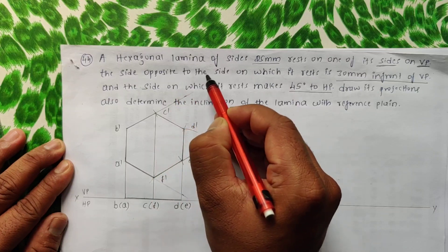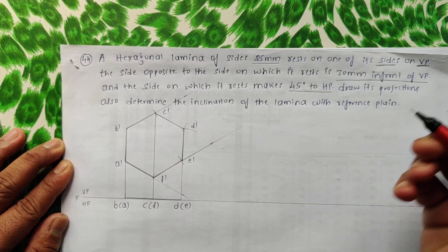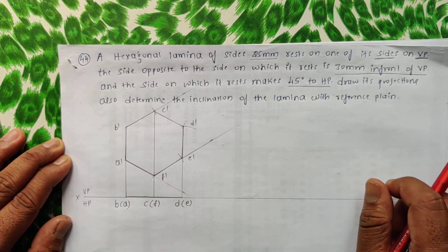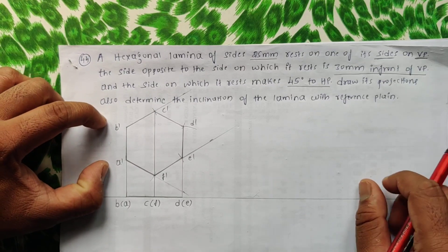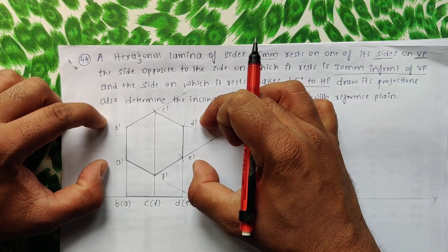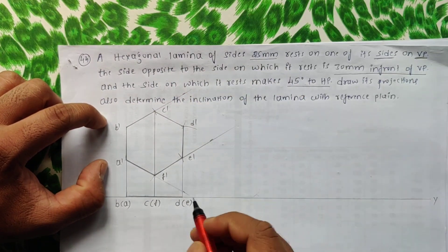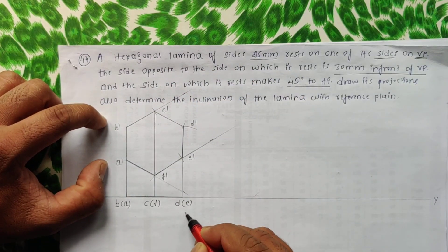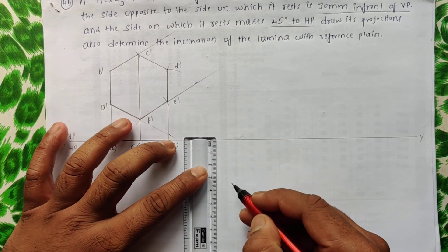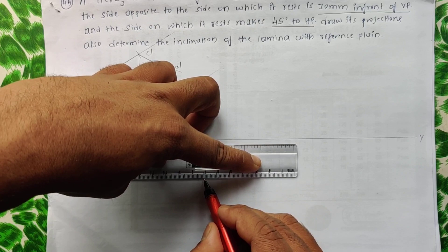Now check the next condition: the side opposite to the side on which it rests is 30mm in front of VP. In front of VP means it is always below the XY line. The side on which it is resting is a-dash b-dash, and the side opposite is d-dash e-dash. This d-dash e-dash should be 30mm in front of VP, so mark 30mm from the XY line and draw a thin line there.